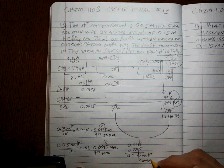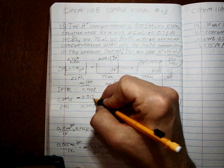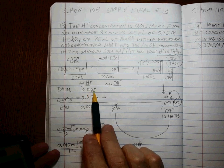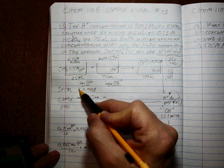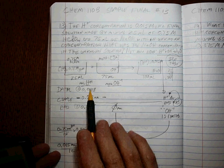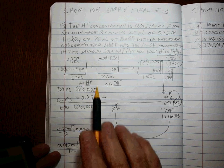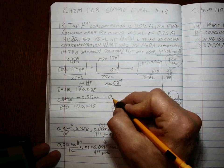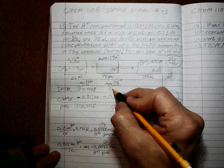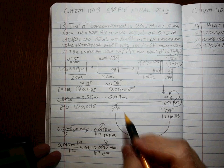So 0.017 moles is the change. That's how much reacted if you started with 0.0188 to two sig figs and ended up with 0.0015 to two sig figs. Since it's a one-to-one ratio, that's how much OH- reacted. And since you ended with zero, 0.017 moles of OH- is what you started with.